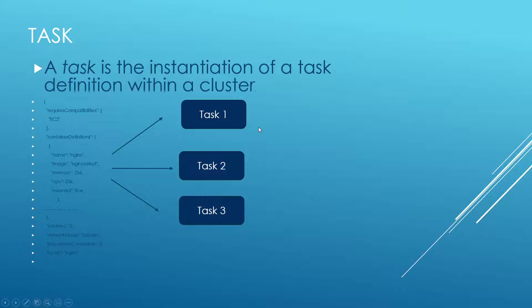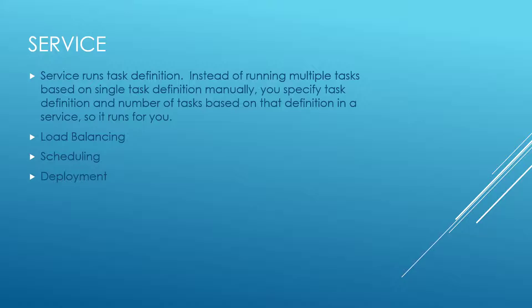A task is the instantiation of a task definition. If you're a Java developer, think of the task definition as a class — it doesn't do anything unless you create an instance. The task is similar in that sense. As you can see, the task definition is the JSON on the left side, and you can run multiple tasks based on that definition. That's where the service comes in — it runs tasks automatically for you, and also takes care of load balancing, scheduling, and deployments. If you're familiar with Kubernetes, it's kind of like a lighter version of it.